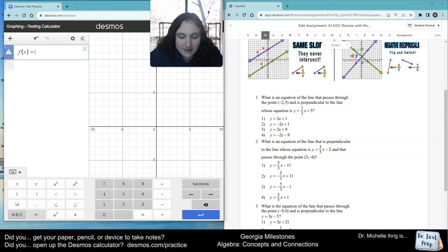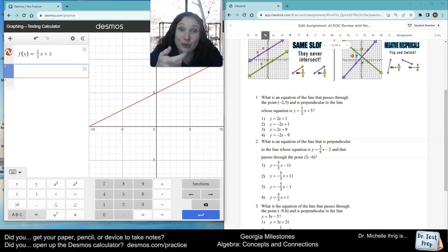First, we type in our function. I'm going to do f of x equals one-half, move my arrow, x plus five. I also know it needs to go through the point negative two positive five. So I'm going to just write that. Now, I'm just typing in the answer choices and see which one makes a right angle through the red line and goes through the blue dot.